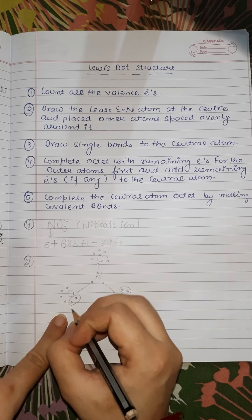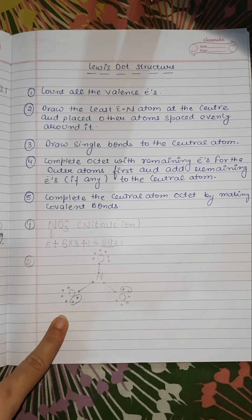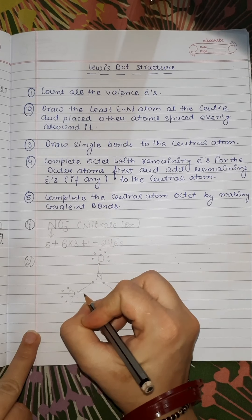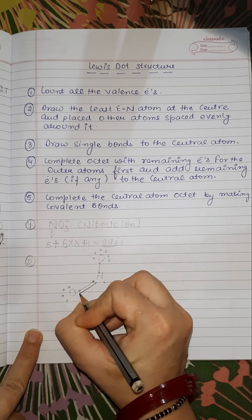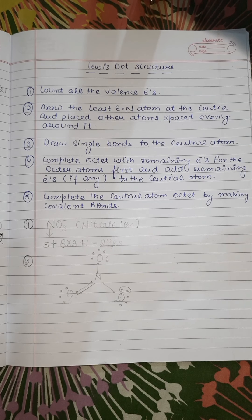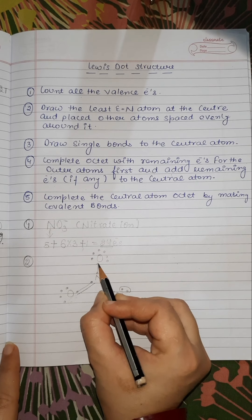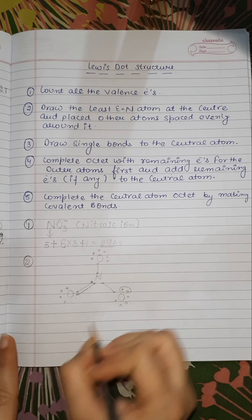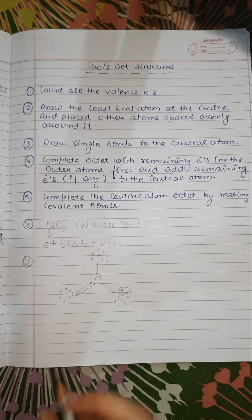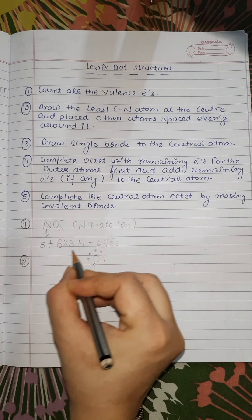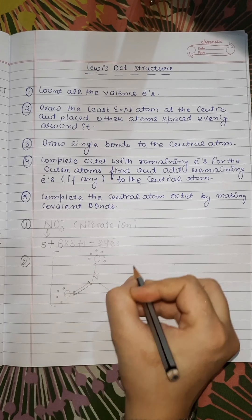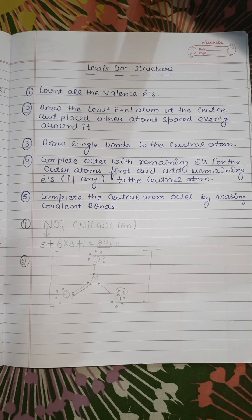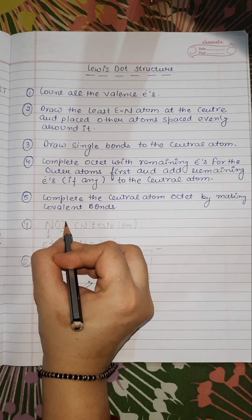We remove those 2 electrons from the oxygen and form a double bond between nitrogen and that oxygen. Now nitrogen has 8 electrons — its octet is complete. This is the Lewis dot structure of NO₃⁻. We place a negative sign on the structure because of the negative charge.